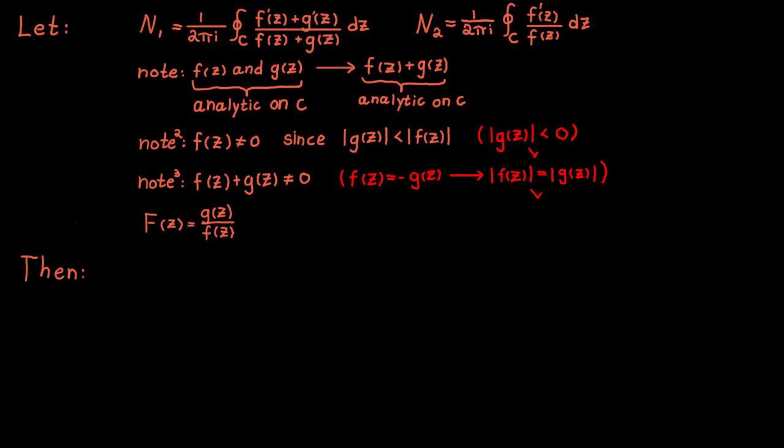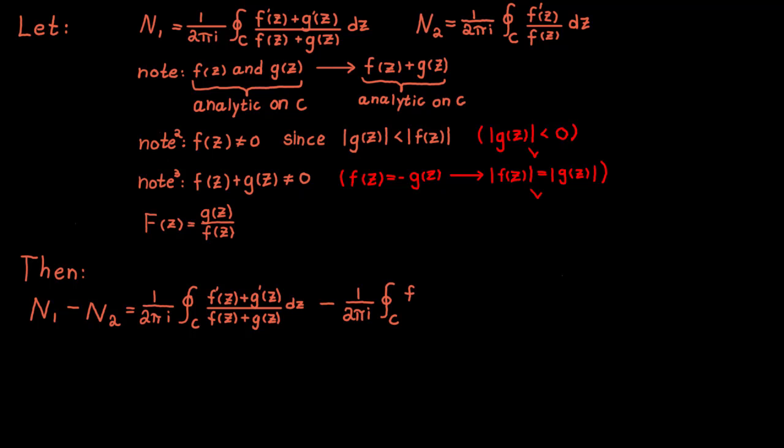We want to prove that f and f plus g have the same number of zeros inside the closed curve c. It is sufficient to show that the difference n1 minus n2 equals zero. Using the variables defined above, we write out the expression, and then substitute using the fact that g equals capital F times f, with the derivative computed by the chain rule.